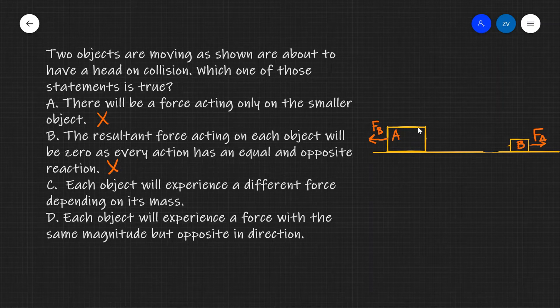So the force due to object B is going to be exactly the same as the force due to object A but will be in the opposite direction which is represented by this minus sign over here.